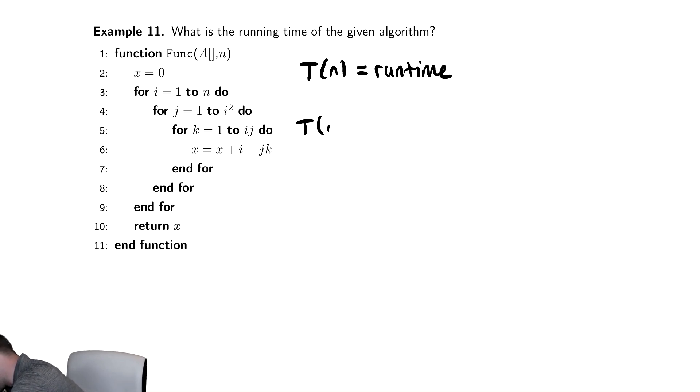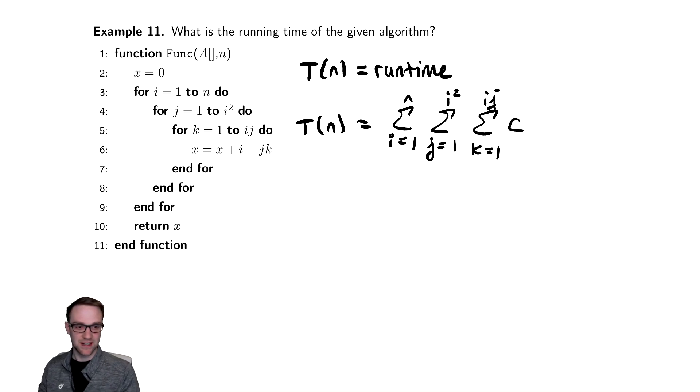And we're going to write T(n) as a triple summation. The sum from i equals 1 to n of the sum from j equals 1 to i squared of the sum from k equals 1 to ij of c. I guess this is an important distinction to make with my own misspeaking there.